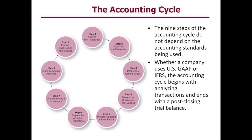Then we'll post that transaction to the ledger, and from there we'll prepare the unadjusted trial balance. Then we'll make sure that our debit account balances equal our credit account balances, and then we'll prepare our adjusting journal entries and then our adjusted trial balance — to again ensure that once we've made our adjusting entries, our accounts still balance and debits still equal credits.